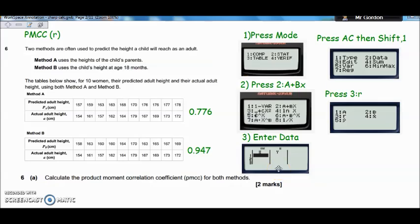You're entering that data with this top row going downwards in the x column and the second row going downwards in the y column. Once you've entered all that data, you need to press AC, and then shift 1. And that will bring you into the stats options.